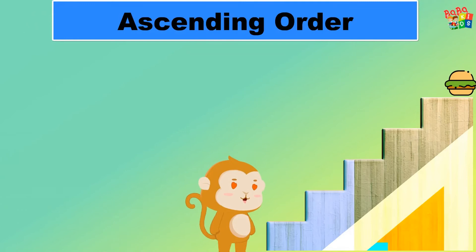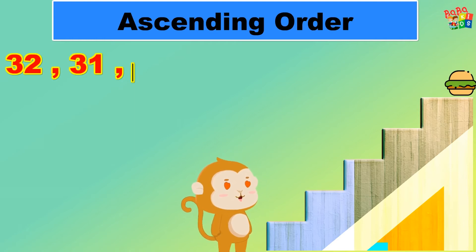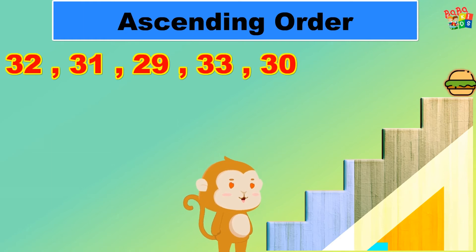Now let's arrange another group of numbers in ascending order: 32, 31, 29, 33, and 30. Now Mr. Chiku once again needs to get his burger by arranging the numbers in ascending order.